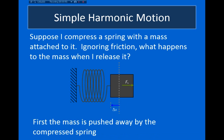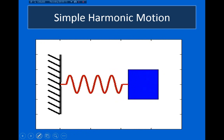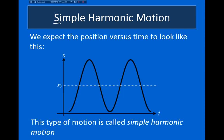So let's take a look at what this motion would actually look like. I have this animation that shows the motion of an object attached to a spring. We can see the mass is just going to move back and forth like this over and over again. This type of motion is called simple harmonic motion, and I'll frequently abbreviate this as SHM. If I plot the position of the object versus time, I'll get a curve that's centered around the equilibrium position for the mass.